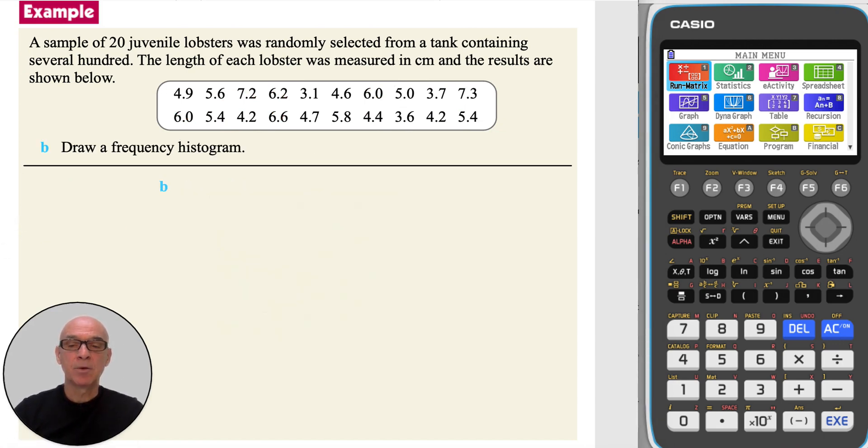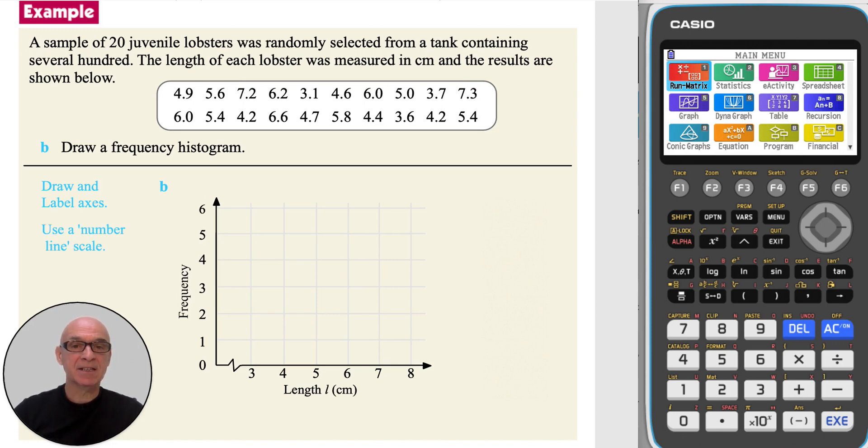In part B, we're asked to draw a frequency histogram. So, if we draw and label the axes, remembering that the x-axis must be a number line scale, and then draw the bars, as shown.